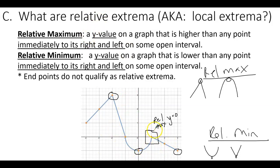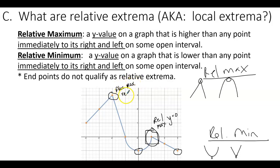You might wonder: this point is a relative max, but we also said it's an absolute max — how do I know which it is? It's actually both. It's the absolute maximum because it is the highest point, but it's also a relative max because it's higher than every point immediately to its left and right. It's possible for a relative maximum to also be an absolute maximum.